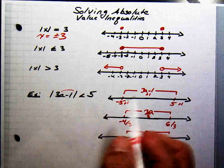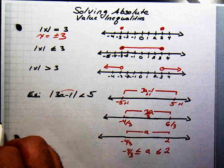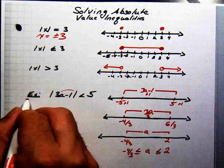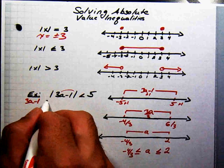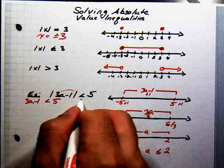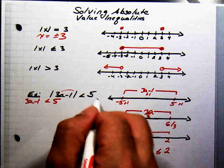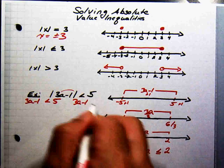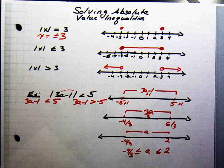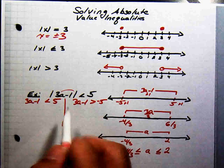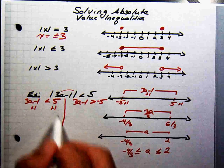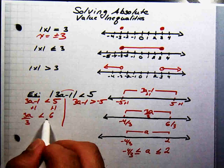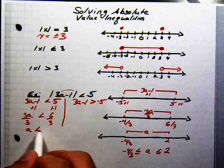Now let's take a look at the actual inequality and solve it algebraically. We're going to write this as two separate inequalities and remove the absolute value bars. Using the right-hand side, we rewrite it as 3a minus 1 is less than 5. Adding 1 to both sides gives 3a is less than 6, and dividing by 3, a is less than 2.